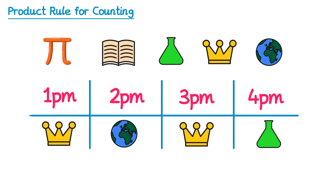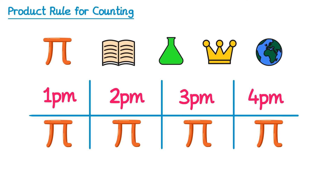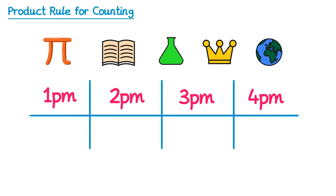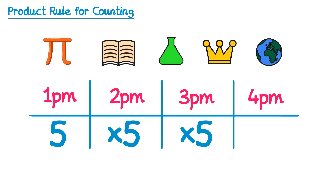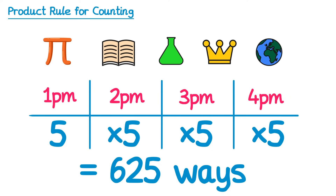Or you could even just choose maths for all of the slots. For the first hour at 1 p.m. there are five different possibilities. For the second hour there are also five possibilities, and the same for the third and fourth hours. So there are five times five times five times five, which is 625 ways of creating this revision timetable.